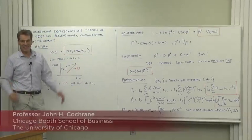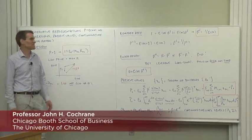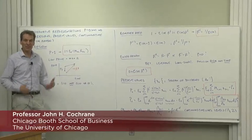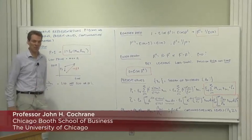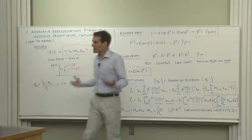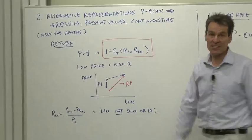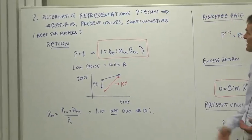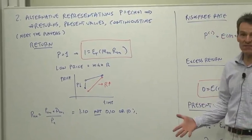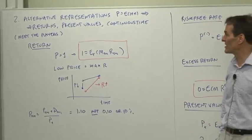Before we do the classic ideas of the theories of finance, you've got to meet the players. We've got to think about returns, present values, the other ways of stating the basic representations. So that's what we're going to do now: alternative representations of our price equals expected discounted payoff ideas, returns, present values, and how does this stuff look in continuous time.